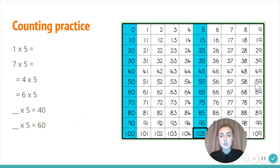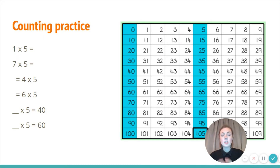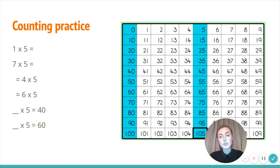The first thing we're going to do is some counting practice in fives, as that will really help us today. There are six questions for you to pause and have a go at. Remember our multiply sign means lots of. You could use some small objects, the number grid, or count on your fingers. Pause now and give those a go.